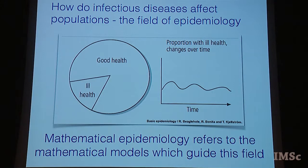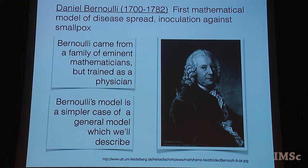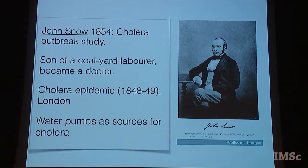The field of epidemiology deals with diseases and how they spread. The real question is: how do infectious diseases affect populations? If you divide the population into those with ill health and those with good health, the proportion with ill health changes with time — how does this change happen? Mathematical epidemiology refers to the mathematical models which guide this field. The first person to think about a mathematical model for infectious disease was Daniel Bernoulli, from a very famous mathematical family, who was himself trained as a doctor. He was particularly interested in inoculation against smallpox and the extension of lifetime that was possible.